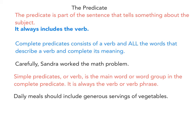For example: 'Carefully, Sandra worked the math problem.' The first thing I like to do is find the verb. 'Worked' is my verb because it is the action. Then I find the subject by asking who or what worked the math problem — that is Sandra. The rest is the predicate. To find the complete predicate, I ask what did Sandra do: 'Sandra worked the math problem carefully.' That is the complete predicate.